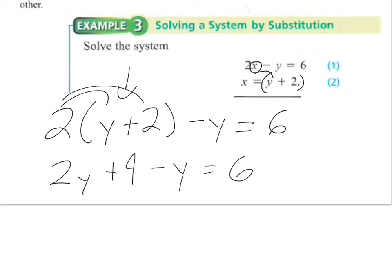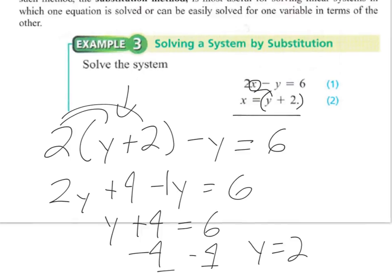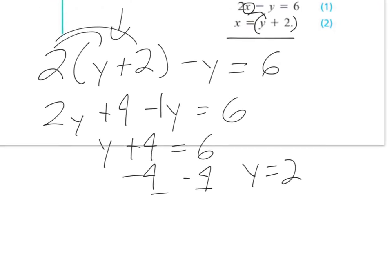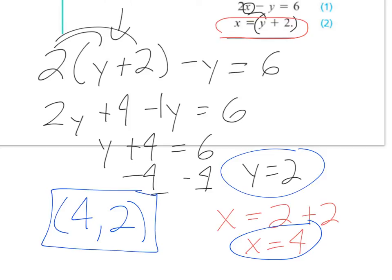On the left side we can combine the 2y and the minus y to get y plus 4 equals 6. Subtract the 4 from both sides, and we find that y is 2. Now we use that to find x: the equation tells me x is y plus 2, and since y is 2, x is 4. So the ordered pair that solves it is (4, 2) — you can write x equals 4 and y equals 2, or the ordered pair (4, 2).